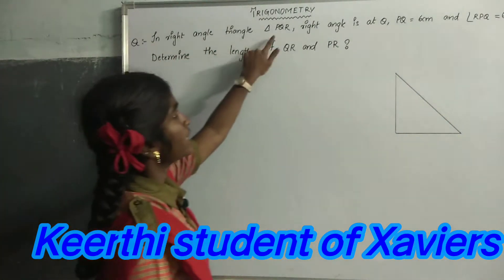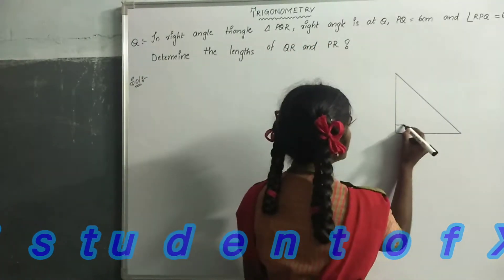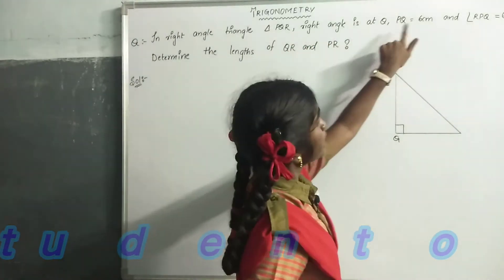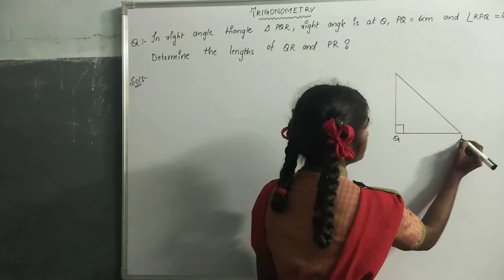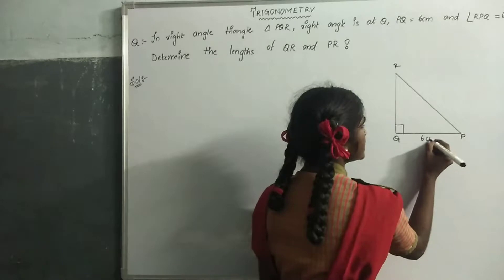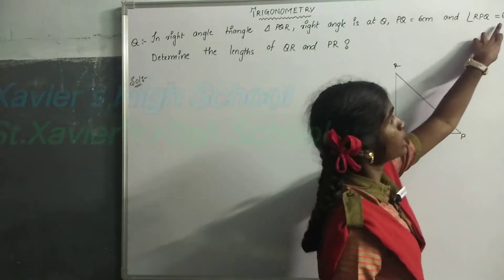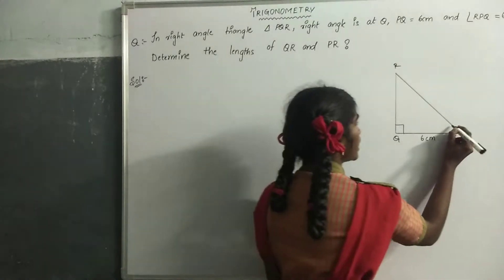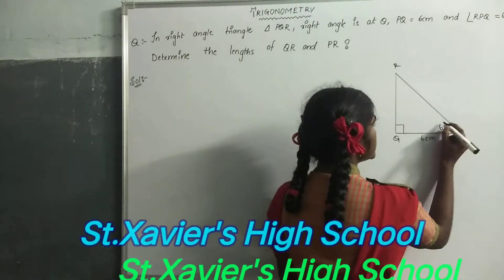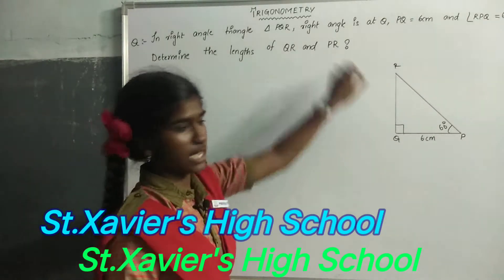In right angle triangle PQR, right angle is at Q. If PQ equals 6 cm and angle at P is 60 degrees, determine the lengths of QR and PR.